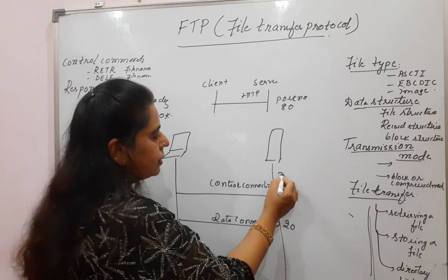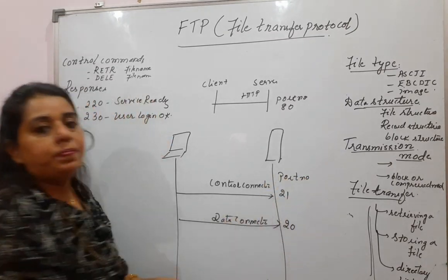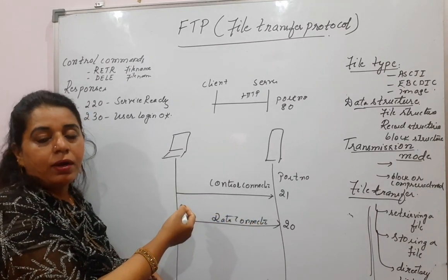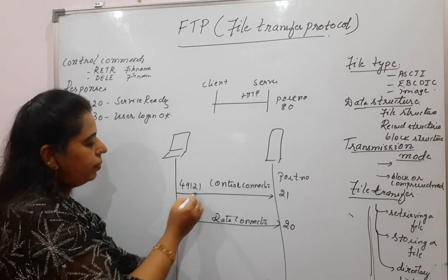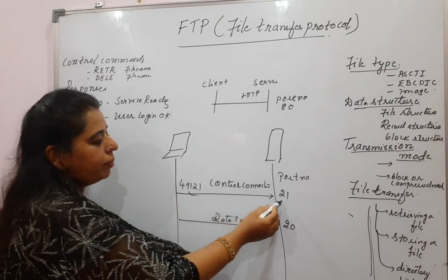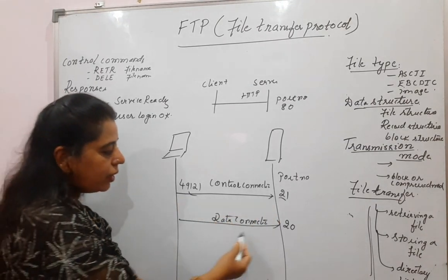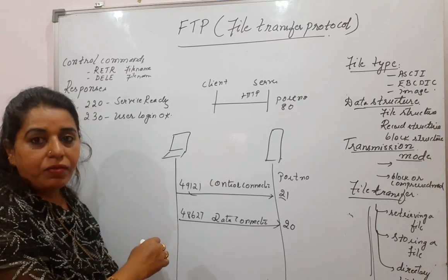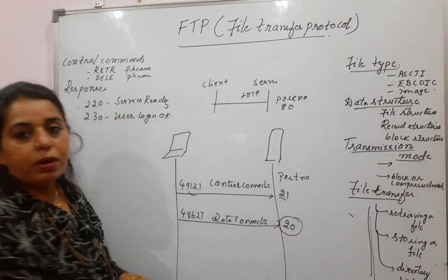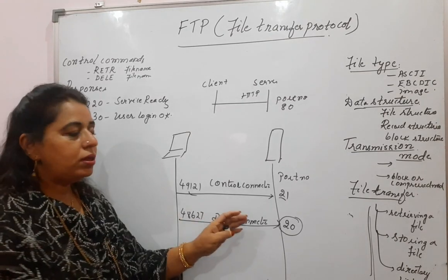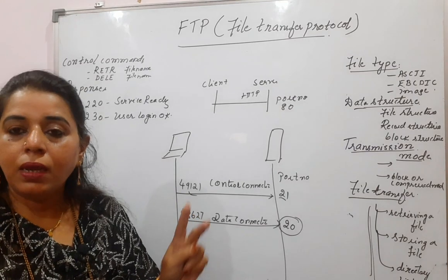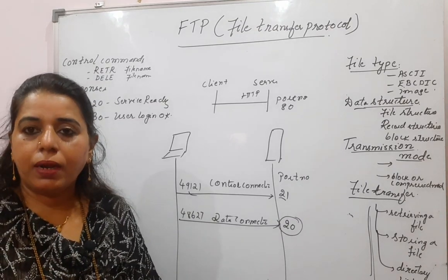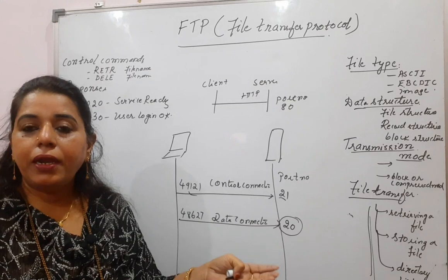These two port numbers are at the server side. Whenever a client wants to make a request, in the source port number it will make use of its randomly generated dynamic port number. This will be the source port number and the destination will be port 21. Whenever it is making a data connection with the server, it will have its source port number randomly generated from the dynamic port range, and it will make use of the well-known port number 20 at the server side. The control connection is used for control commands and the data connection is used only to exchange data.